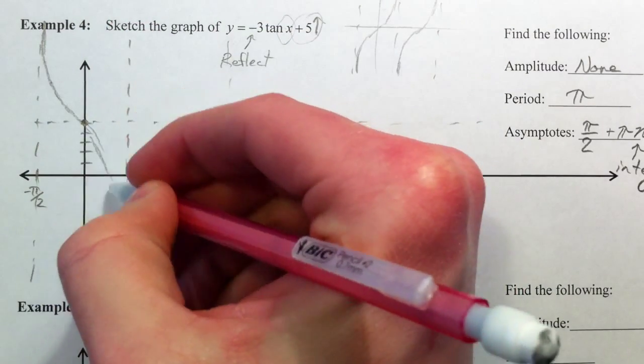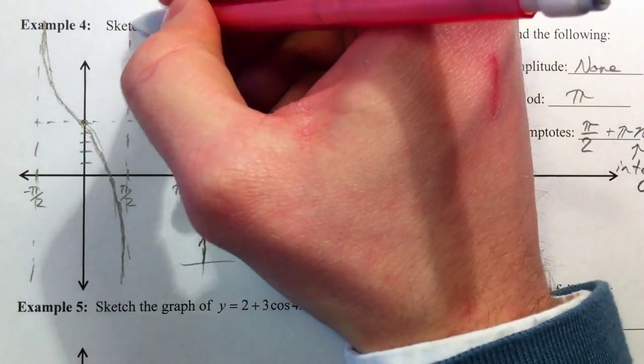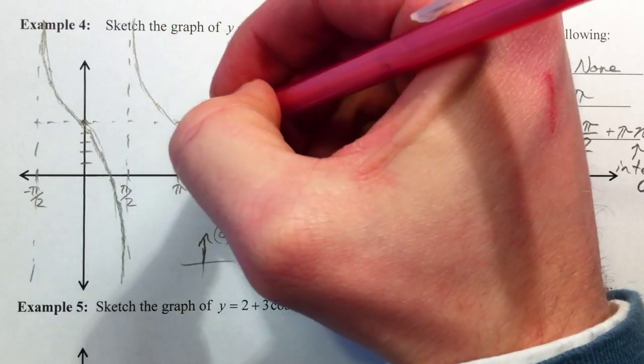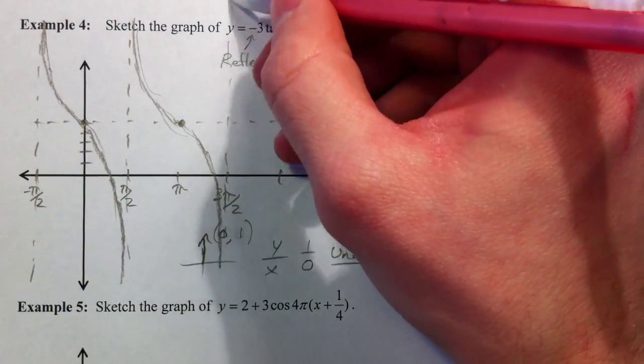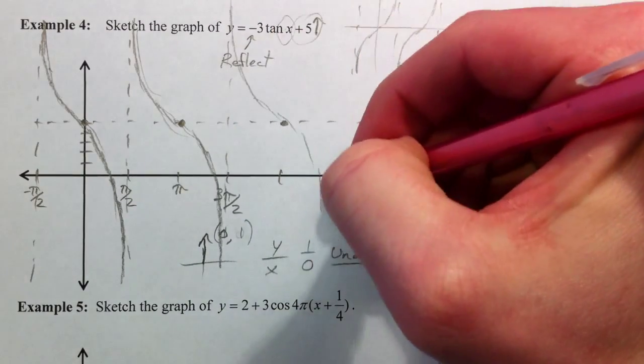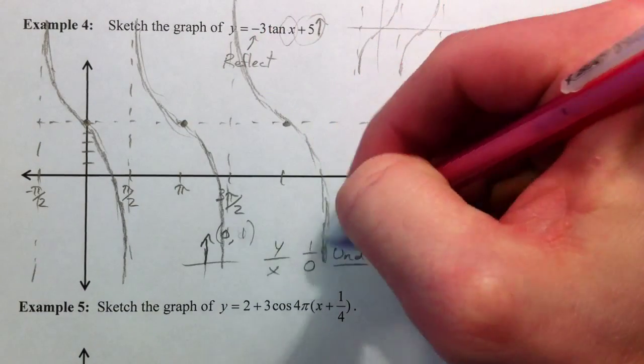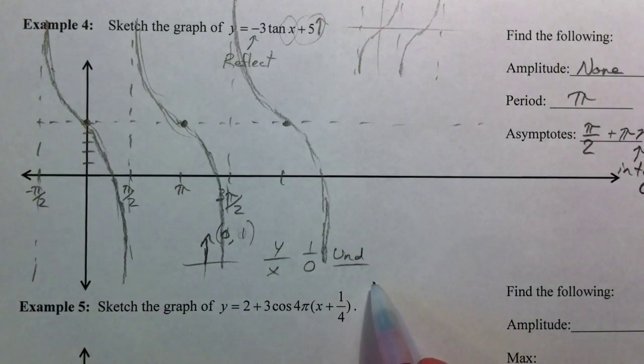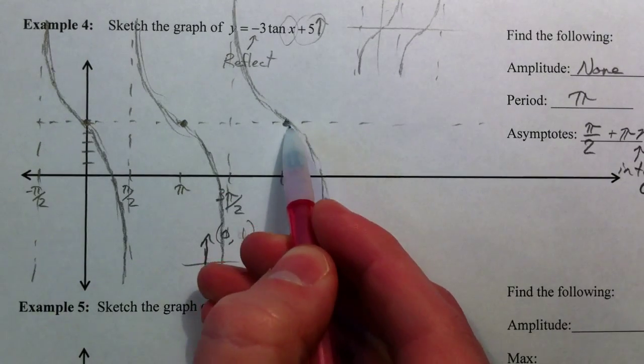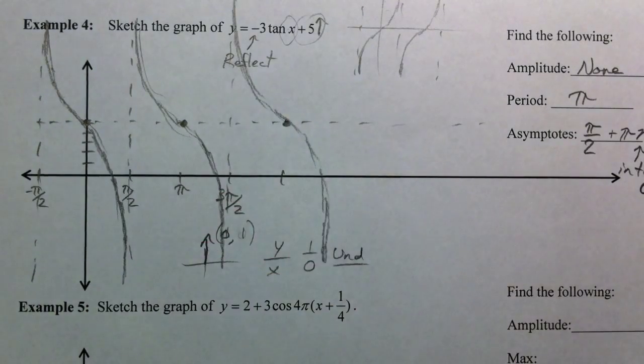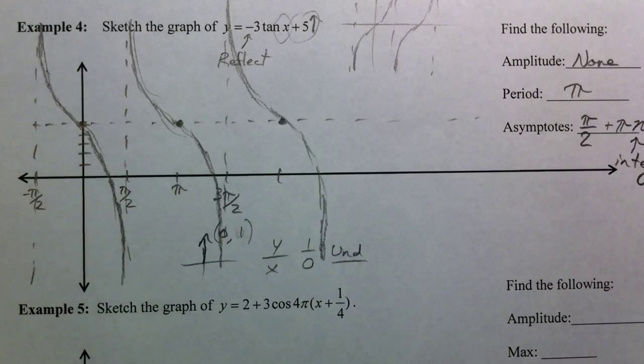Now, what does the 3 do? The 3, if it was in front of a sine function, would be a vertical stretch. And it still is a vertical stretch, and it's going to go down a whole lot faster than it usually does. But we're not going to worry about that and how it shows up on our graph, because I'm more so worried about where the asymptotes show up. And so we have our asymptotes of pi over 2, 3 pi over 2. We've got the center, sort of where that inflection point, as we call it, is. And there's your tangent graph. A lot going on there.